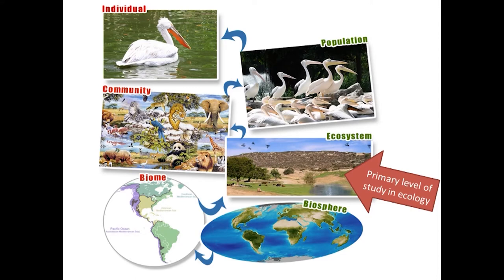This illustrates the ecological levels of organization, starting with an individual or species, the population or species within a given area, the community or groups of populations within a given area, an ecosystem or groups of communities as well as the non-living things, the biomes, and then the biosphere. The level of the ecosystem is what we primarily focus on when studying ecology, because it's important to know not only how living things interact with one another, but how they are also influenced by non-living things in their environment.